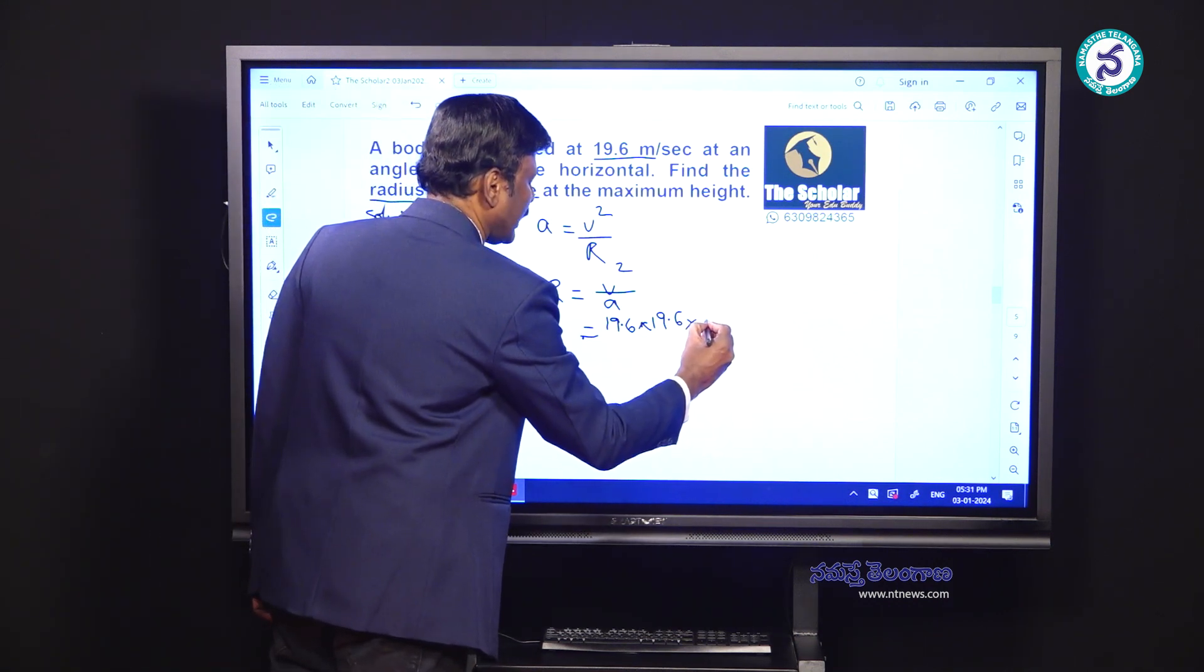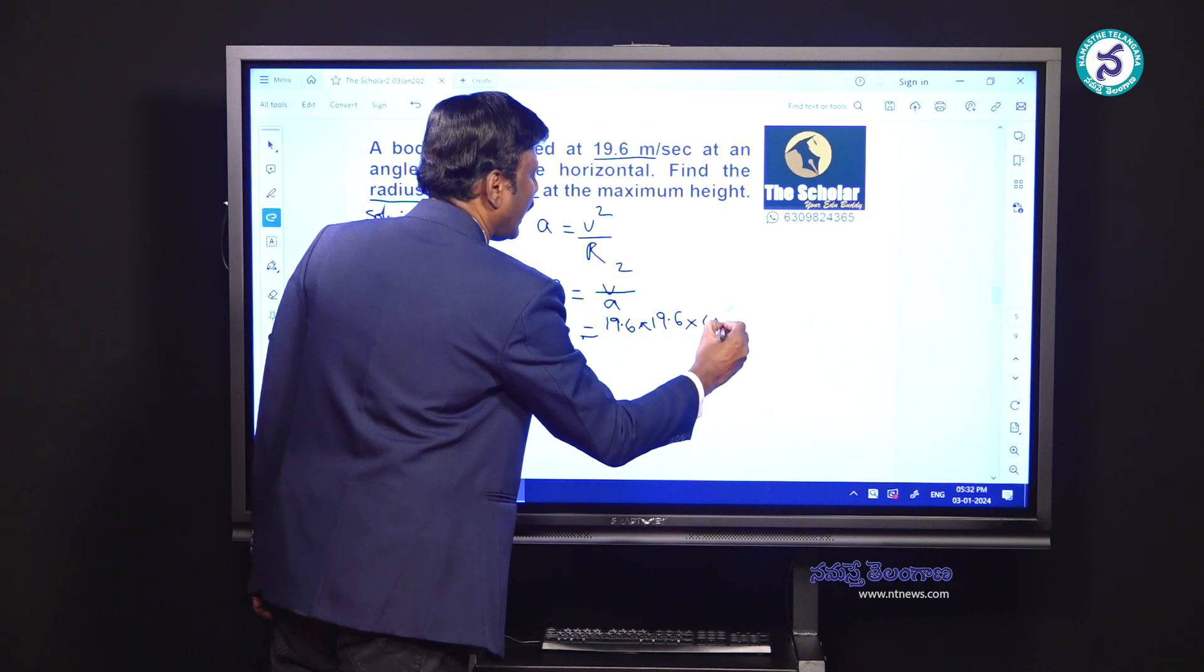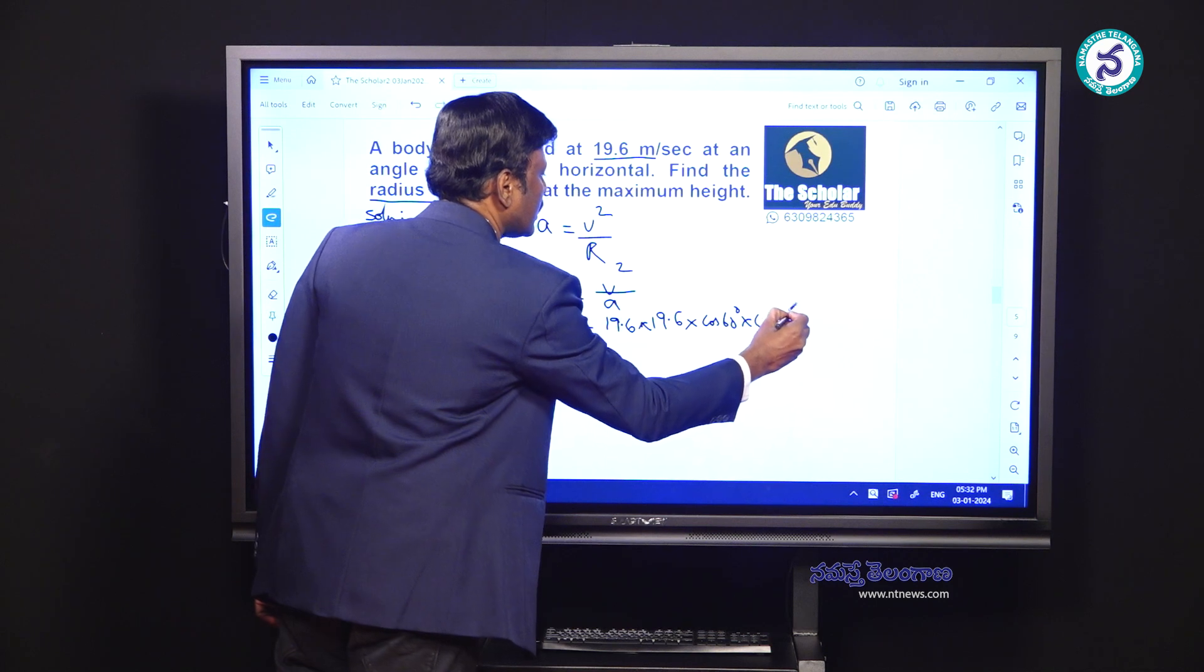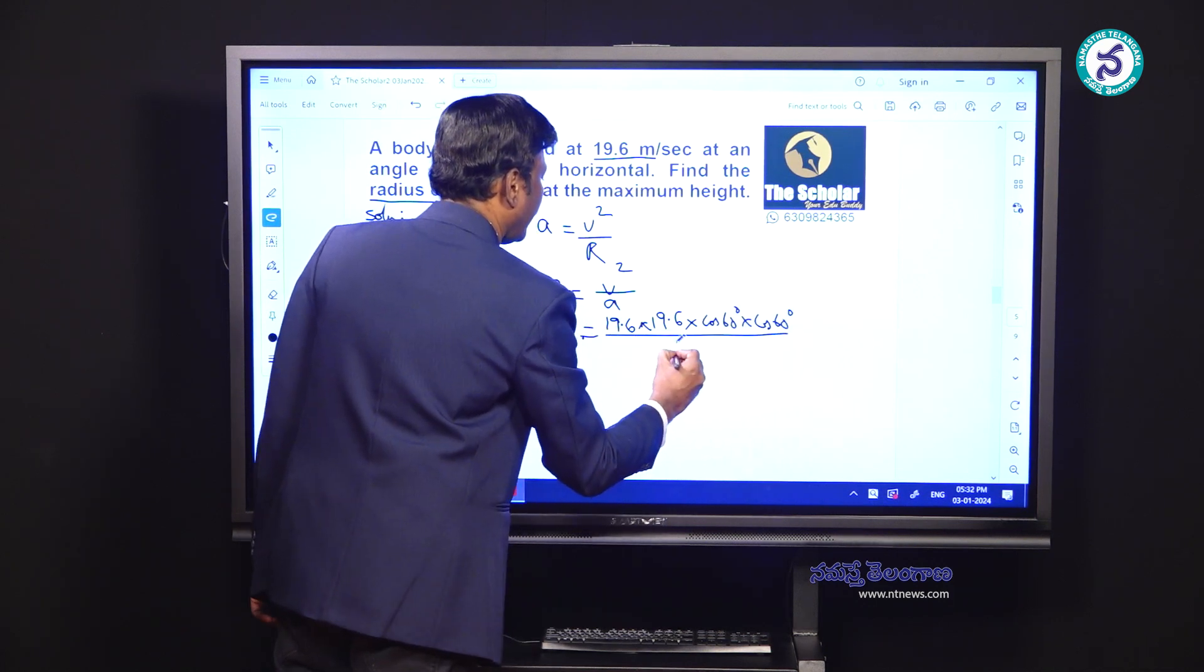we will write the value of cos 60 twice here, which comes out as cos 60 into cos 60 again by A.